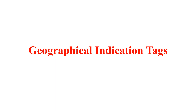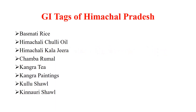Hello friends, let's continue our discussion on Geographical Indication tags. Today I will discuss GI tags of the state of Himachal Pradesh: Basmati Rice, Himachali Chuli, Himachali Kalajira, Chamba Rumal, Kangra Tea, Kangra Paintings, Kulu Shawl, Kinori Shawl.